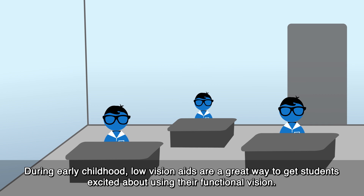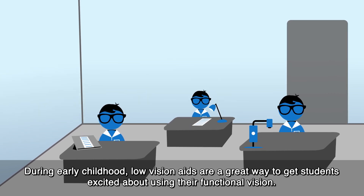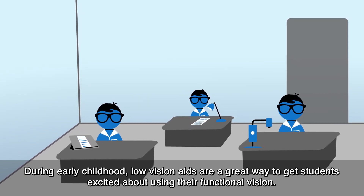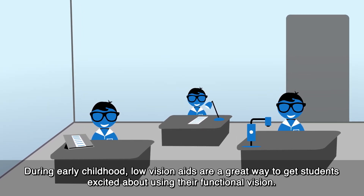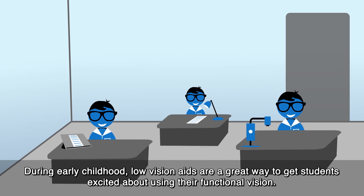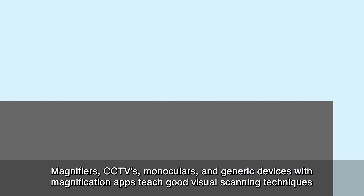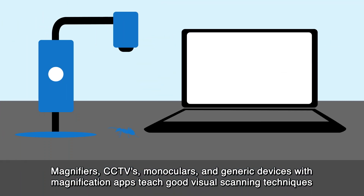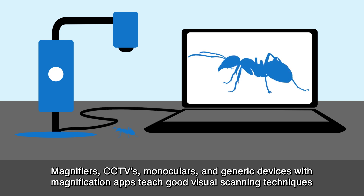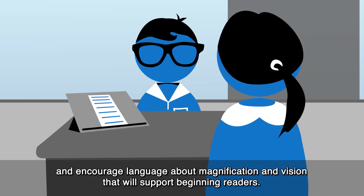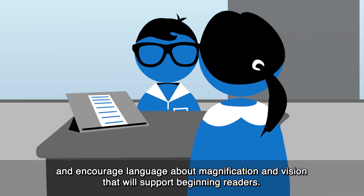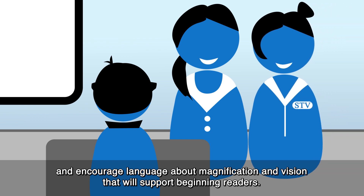During early childhood, low vision aids are a great way to get students excited about using their functional vision. Magnifiers, CCTVs, monoculars and generic devices with magnification apps teach good visual scanning techniques and encourage language about magnification and vision that will support beginning readers.